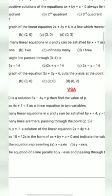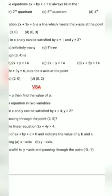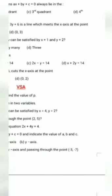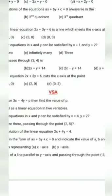How many linear equations in x and y can be satisfied by x equal to 1 and y equal to 2? It may not be 1, 2, or 3 — it may be 4, 5, 6, 7, 8, meaning up to infinitely many linear equations can be satisfied. So option C will be the correct answer.